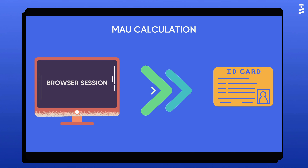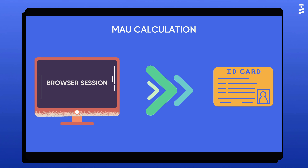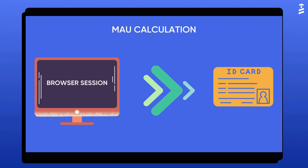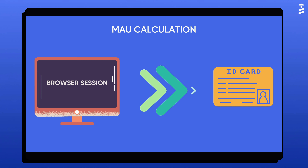Let's look into how MAU is calculated and how user identification makes a difference. Monthly active users, or MAUs, are the total number of unique users visiting the pages where the UserGuiding container code is installed.